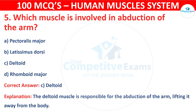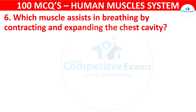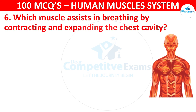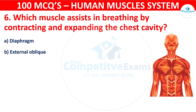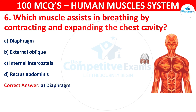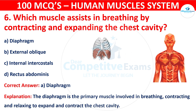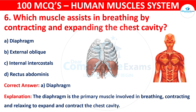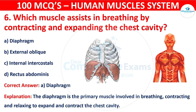Question number six: Which muscle assists in breathing by contracting and expanding the chest cavity? Your options are: Diaphragm, External oblique, Internal intercostals, or Rectus abdominis. The correct answer is A, that is diaphragm. The diaphragm is the primary muscle involved in breathing, contracting and relaxing to expand and contract the chest cavity.